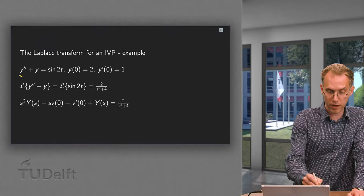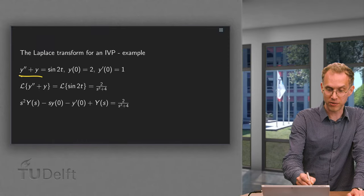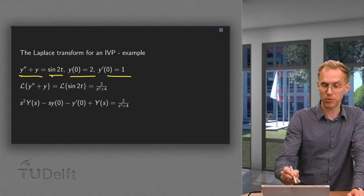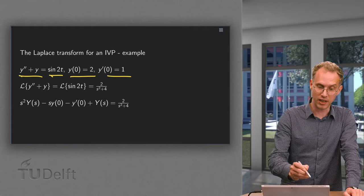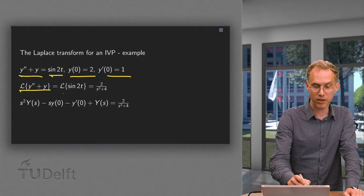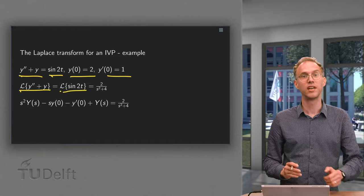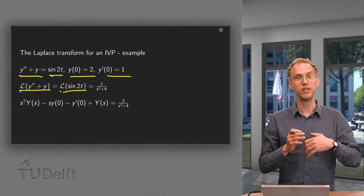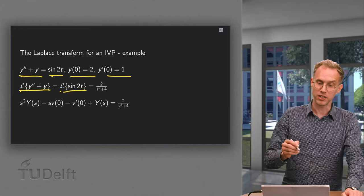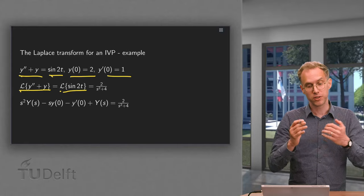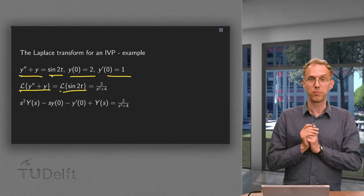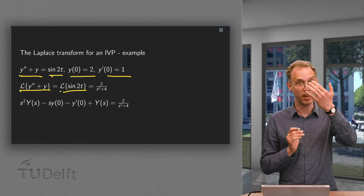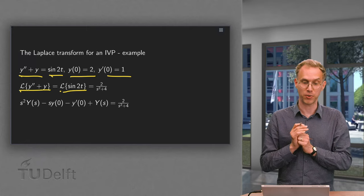We look at y'' + y = sin(2t) with some initial conditions. We take the Laplace transform on the left and on the right, and we know how to compute the Laplace transform of sin(2t). It is given by 2 over s² + 4, because the Laplace transform of sin(at) is a over s² + a².